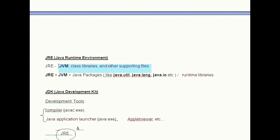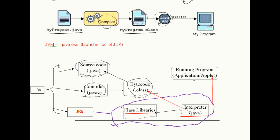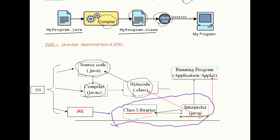Java Runtime Environment contains JVM, class libraries, and other supporting files. It doesn't contain any development tools such as a Java compiler or debugger. As per the diagram, JRE contains class libraries and other supporting files along with JVM. JVM runs your Java program and uses the class libraries and other supporting files provided in the JRE. If you want to run any Java program, you should install Java Runtime Environment in your system. JRE is targeted for the execution of Java files.